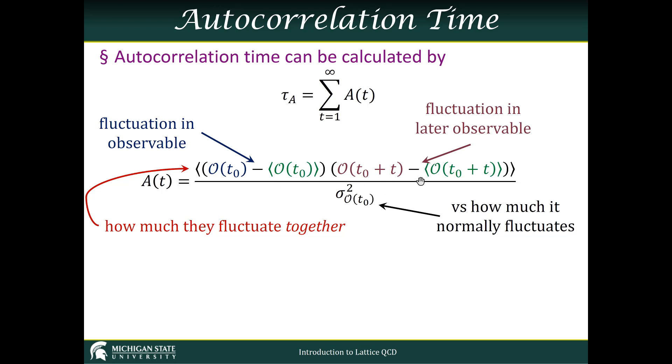we notice that later it is also fluctuating lower. That means these two things are not moving up and down independently. They're moving together—they are correlated, they are autocorrelated.